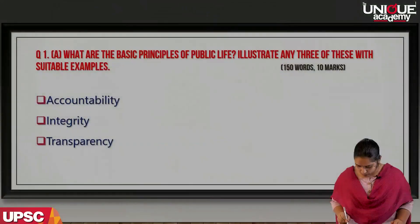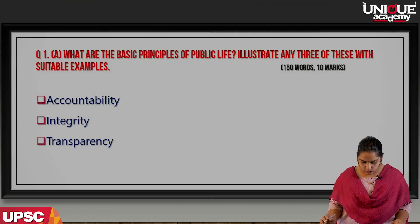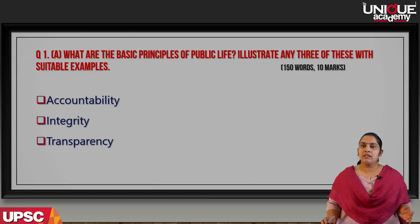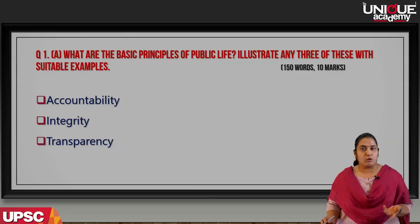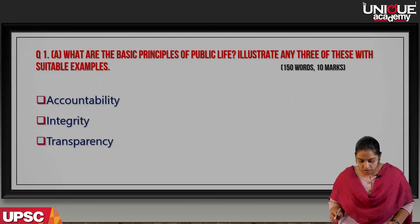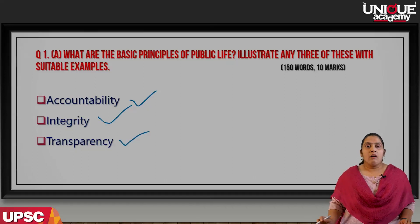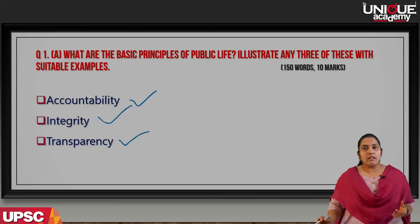Question 1 was: 'What are the basic principles of public life? Illustrate any three of these with suitable examples.' This is a very common question — they either ask for values, principles of public life, or qualities of civil servants. You can always expect one such question at the beginning. Here we have given accountability, integrity, and transparency as the three principles.